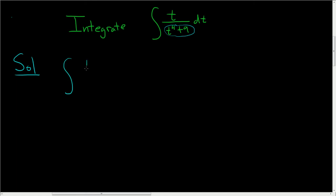So the trick is to first rewrite this as follows. It's t over t squared squared plus 3 squared dt. And now you see that that matches the formula that leads to arctan.